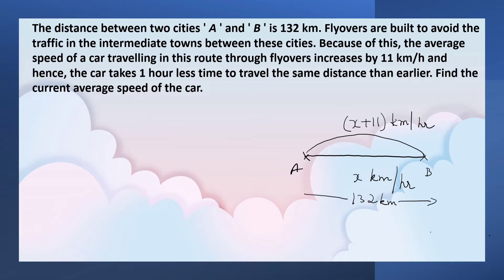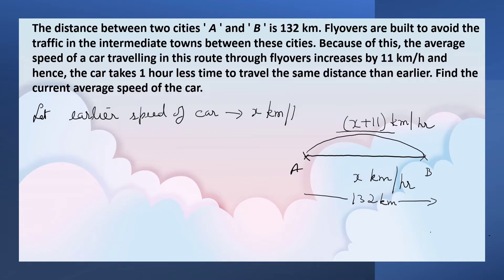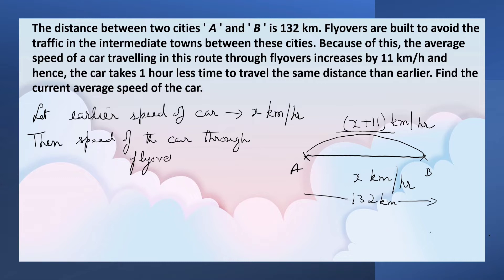We have to find the current speed of the car — that is, the speed through the flyover. Let the earlier speed of the car be x km per hour. Then the speed of the car through the flyover is x plus 11 km per hour. The distance between the cities A and B is 132 km.